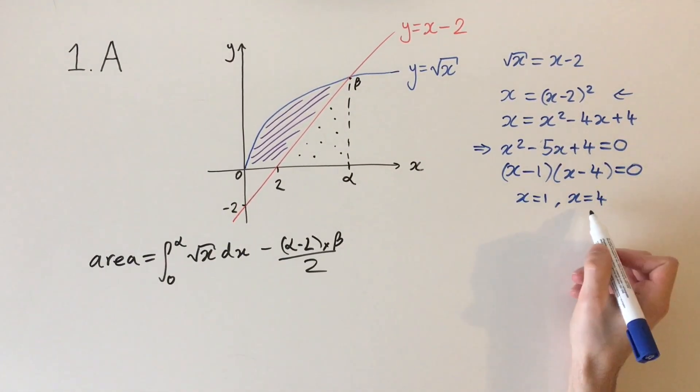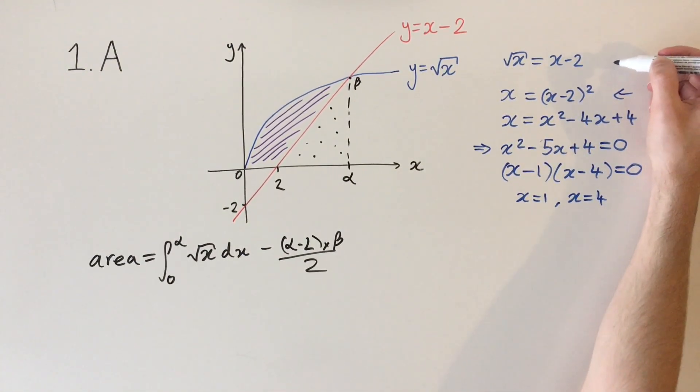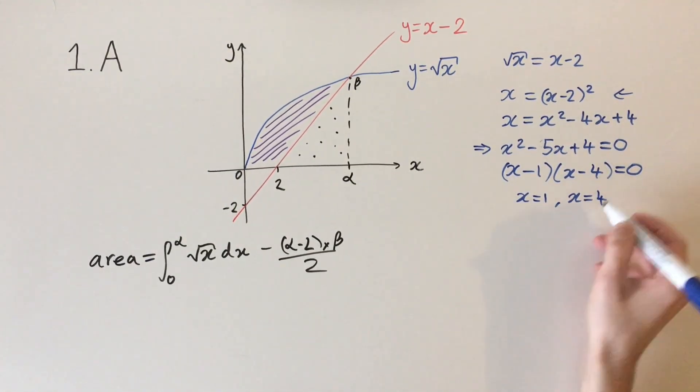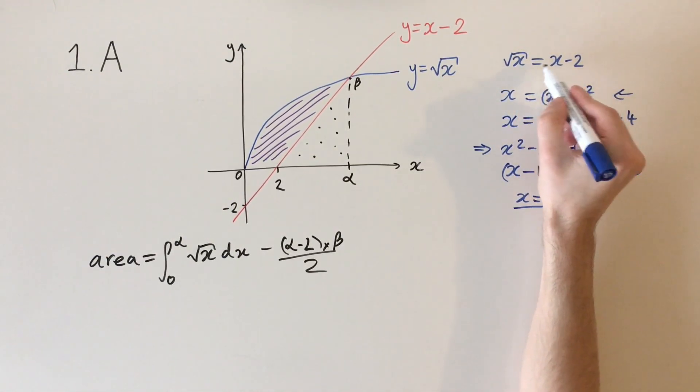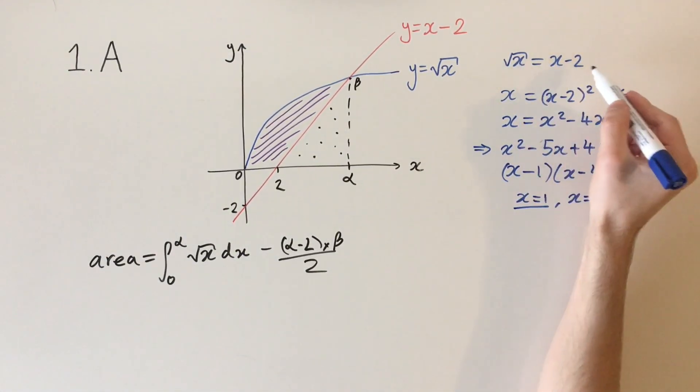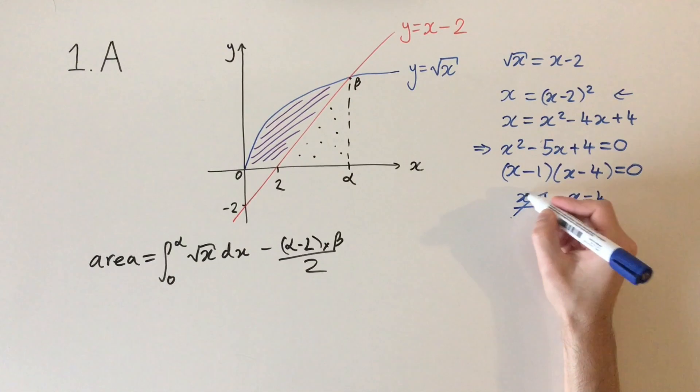However, we need to be careful because these values solve this equation but they don't necessarily solve this equation. We've squared both sides, so we might have introduced another solution. We need to take these values and input them here to see if they hold. If we take x equals 1, we have square root of 1, which is 1, equals 1 minus 2, which is minus 1—that obviously isn't true, so something's gone wrong. This is not a solution.